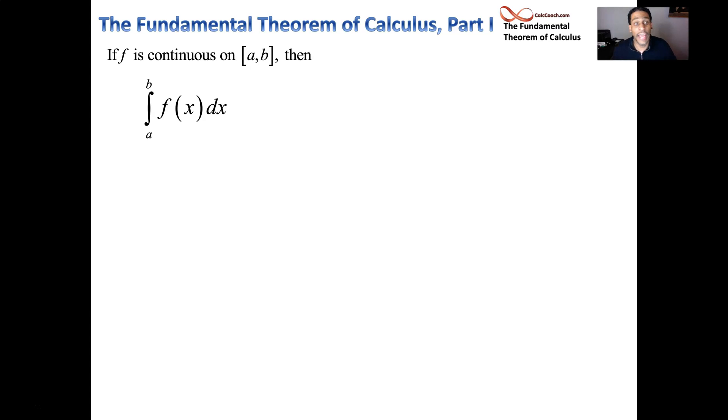and then evaluating it at the limits of integration. First at the integration upper limit of b, and then subtracting from that the evaluation at the lower limit a. G is the antiderivative of your function f.